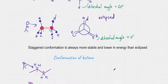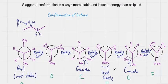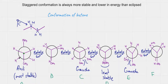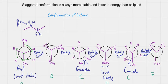Let's look at all the different conformations we can draw for butane. We're looking at carbon number one, and behind it will be carbon number two. Carbon number one has two hydrogens and a methyl group, and carbon number two behind it also has two hydrogens and a methyl group. I started with the staggered conformation. Then you rotate everything by 60 degrees to go to the next conformation — CH3 is next to H, H is next to CH3, H and H are next to each other.